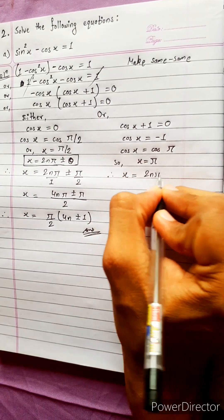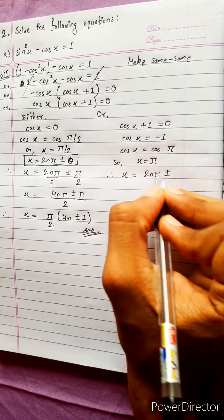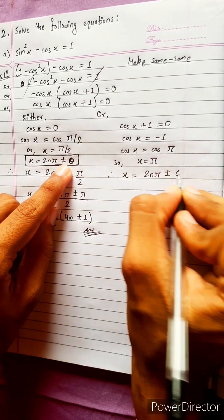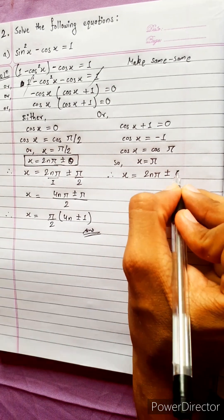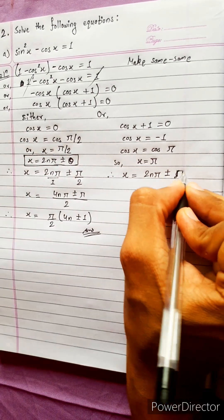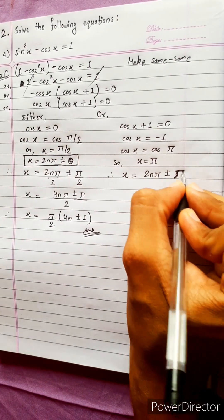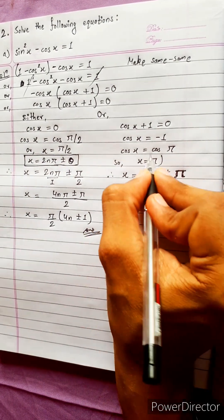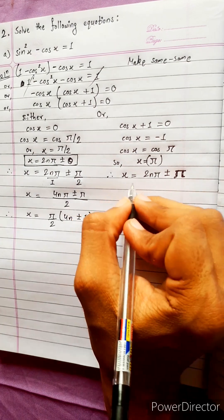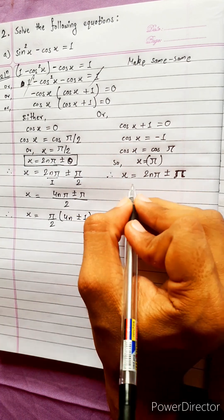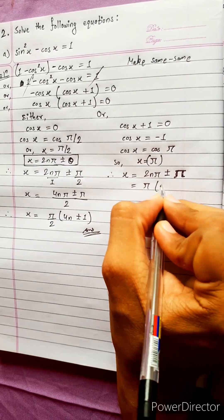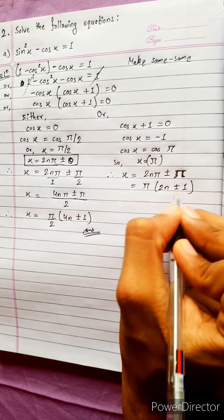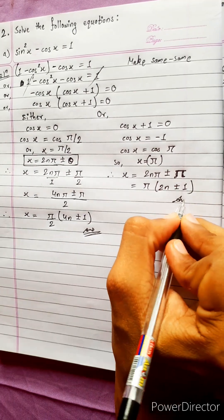Using the cos standard form 2nπ plus or minus theta, the angle here is pi. So x equals 2nπ plus or minus pi — taking pi as common.